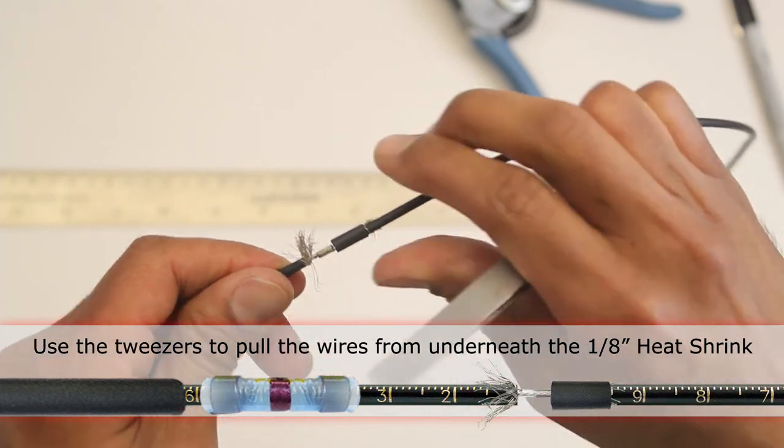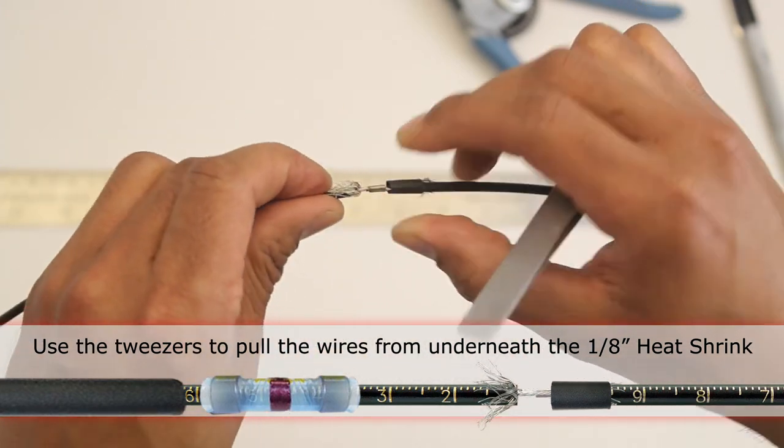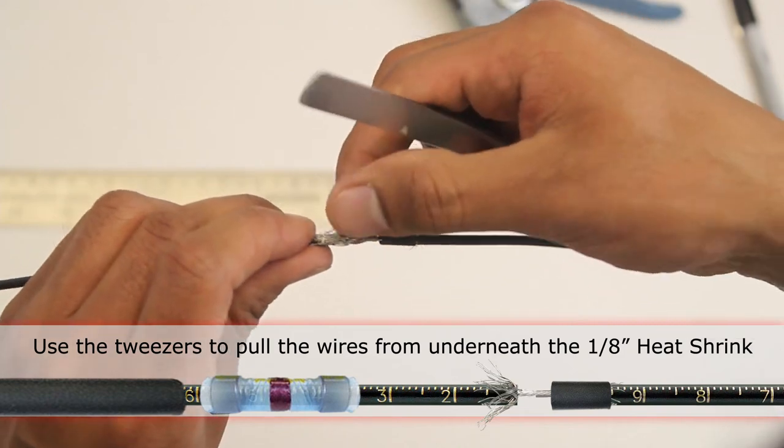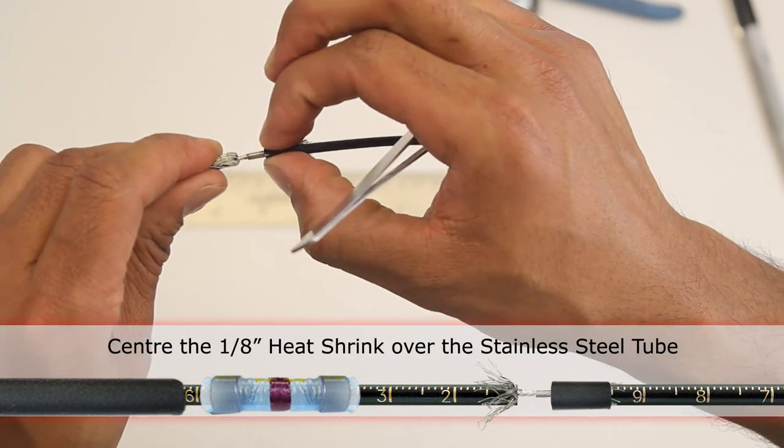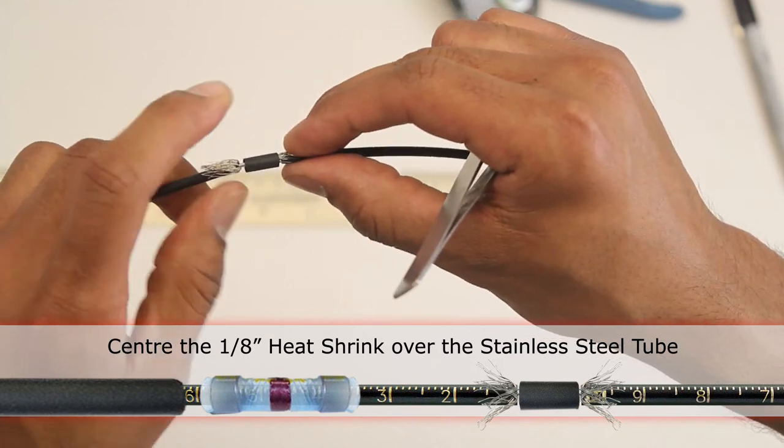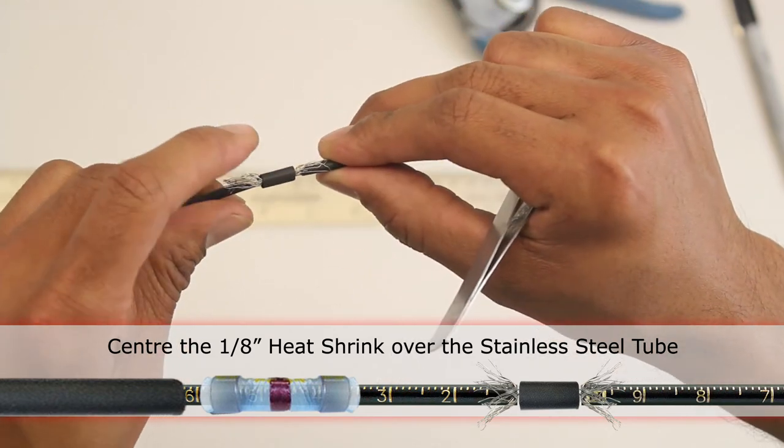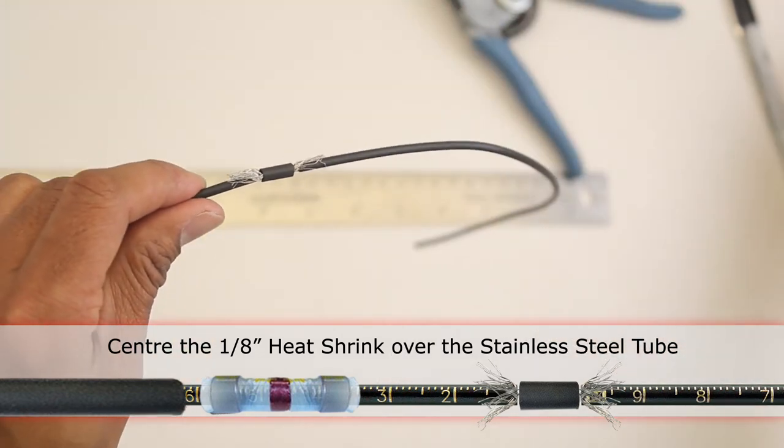Making a contact with the stainless steel tube. It's clear that way. Slide the heat shrink over on the center of the tube. Make sure there is no shielding wire from the other side underneath the heat shrink either.